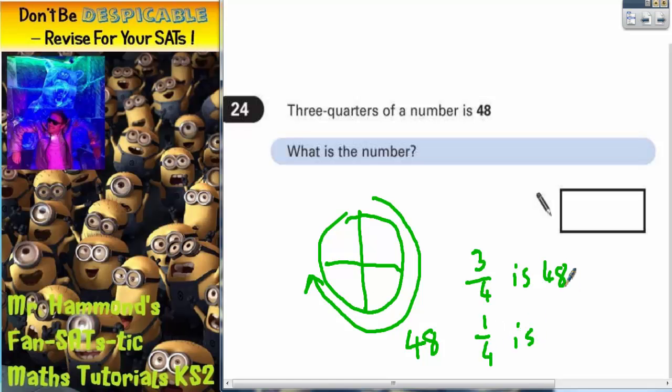Well, what is 48 shared by three? Three's into 48. Three's into four goes once, then you're in a one. Now makes 18. Three's into 18 goes six times. So each one of these quarters must be worth 16.